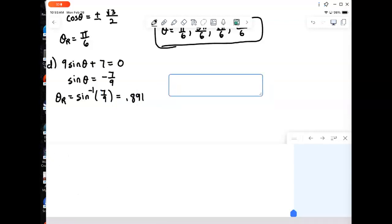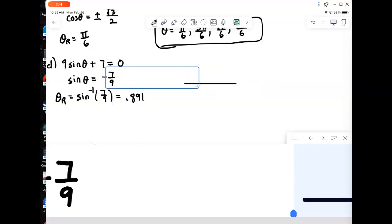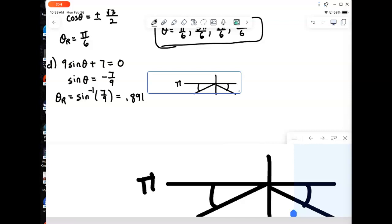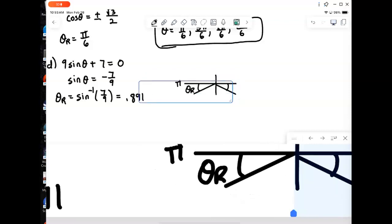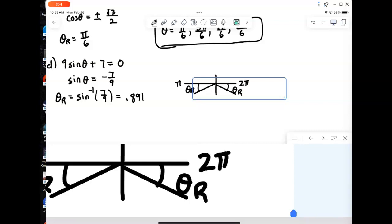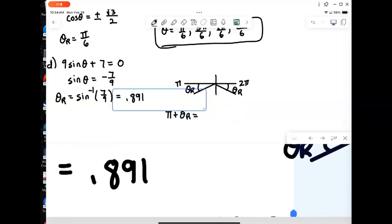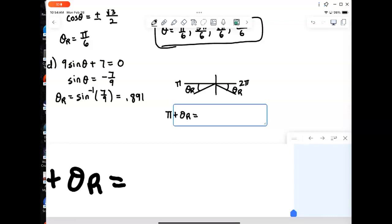Okay, that's my reference angle. We then take that reference angle and put it into the quadrants where, in this case, sine is negative. If you remember from earlier, it would be the third and fourth quadrants. We actually did one of these earlier. And so we're going to either be past pi with the reference angle, or we're going to be short of 2 pi with that reference angle. So pi plus theta r, pi plus 0.891 is going to come out to be 4.033.